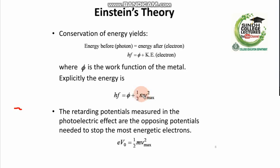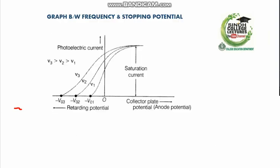If we have the kinetic energy formula and another formula extracted from voltage, we know that V = work/charge. This formula can be extracted from V = energy/charge, which relates stopping potential to the kinetic energy of the electron.